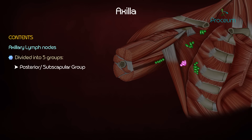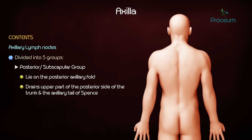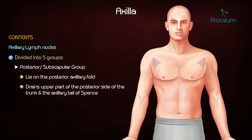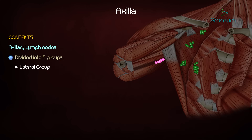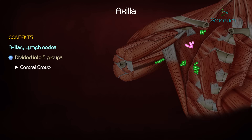The posterior or subscapular group lies on the posterior axillary fold, situated along the subscapular vein. They drain lymph from the upper part of the posterior side of the trunk and the axillary tail of Spence. The lateral group lies along the axillary vein in relation to the upper part of the humerus. They drain lymph from the upper limb.